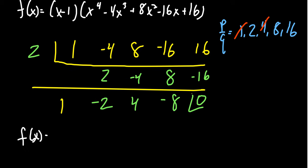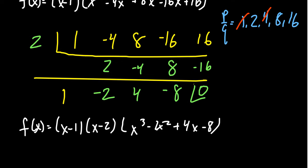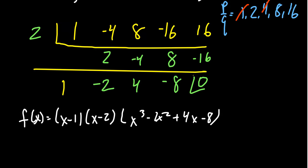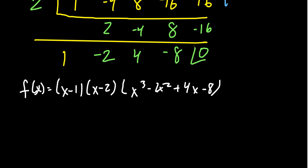So now let's write the factorization we have this time. We have f of x equals x minus 1 times x minus 2. And then what's left over is going to be the cubic polynomial: x cubed minus 2x squared plus 4x minus 8. And so then by the rational roots theorem, we could continue to look for roots. Where 2 would be a thing to check. We could try 2 again.